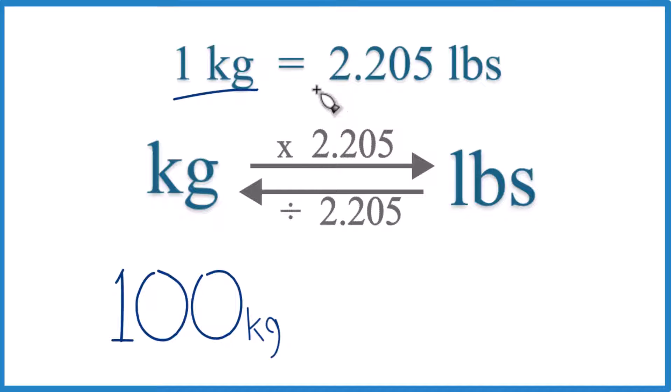One kilogram equals 2.205 pounds. So 100 would just be 100 times this number here. This is called a conversion factor, and we need this when we're going from kilograms to pounds or pounds to kilograms.